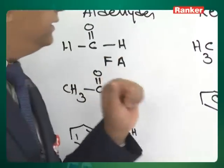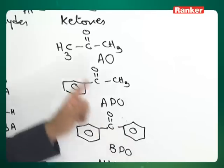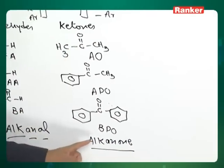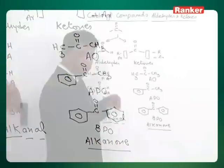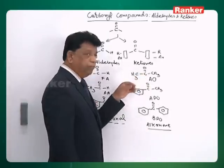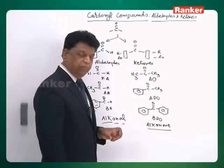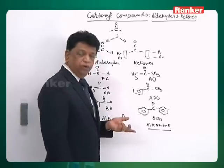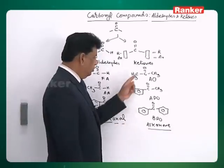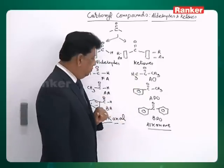For ketones, in IUPAC nomenclature, they are called alkanone. 'Alk' represents the number of carbons, and 'one' codes the keto group. Three carbons gives propanone, four carbons gives butanone. When more carbons are present, the position of the keto group must be specified — for example, with five carbons, it can be 2-pentanone or 3-pentanone.